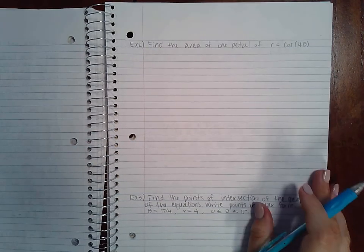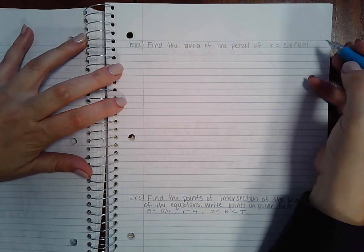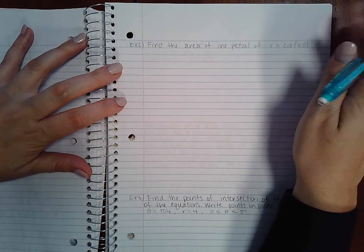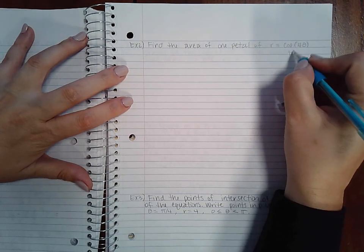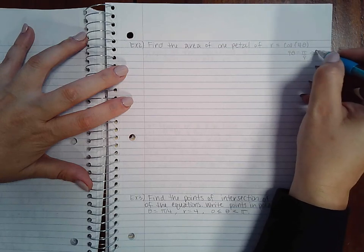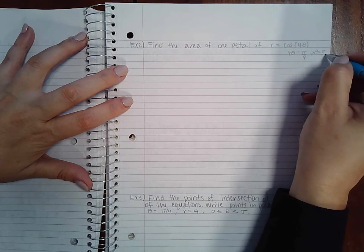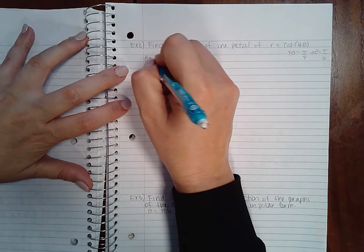Okay, so this is 10.5 example 2. We have to find the area of one petal where r equals cosine of 4 theta. So if I take 4 theta equal to pi over 4 and divide by 4 on both sides, I'm going to get theta equals pi over 16. So that's going to be my increments here: pi over 16.